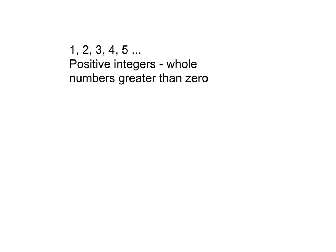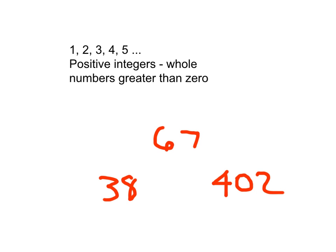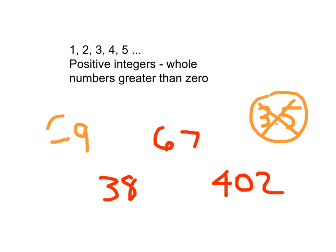Our positive integers are those whole numbers greater than 0. So 1, 2, 3, 4, 5, 67, 38, 402 — all of those are positive integers. Now 3 and a half, or 3.5, would not be a positive integer because it is not a whole number. And a number with a negative sign would not be a positive integer; we would call that a negative integer.